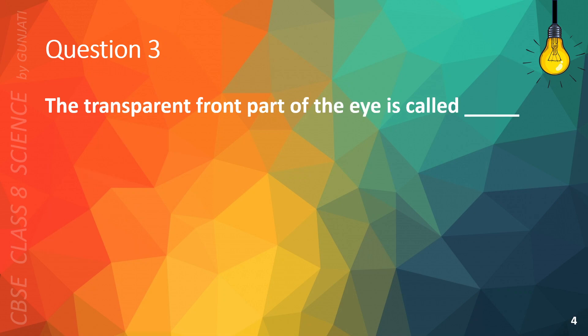Question 3. The transparent front part of the eye is called A. Iris, B. Retina, C. Cornea, or D. Pupil.